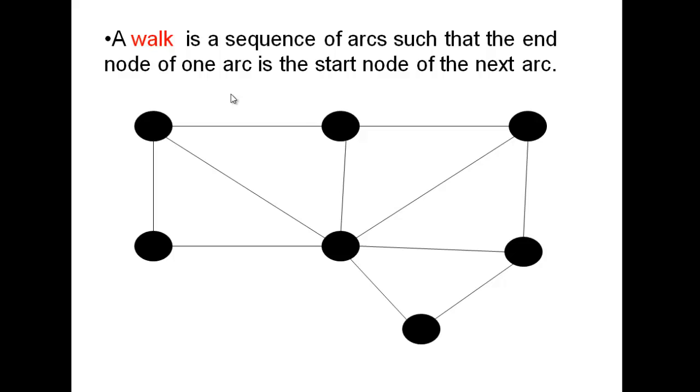A walk is a sequence of arcs such that the end node of one arc is the start node of the next arc. So it's like a little journey through the graph. It doesn't have to cover all of it. It can repeat itself as long as it's continuous, as long as the node that you end up on from the previous arc starts the next arc.